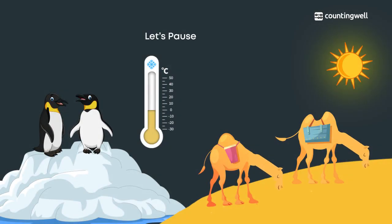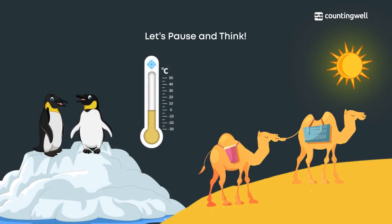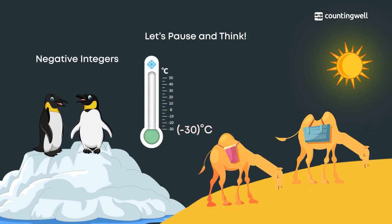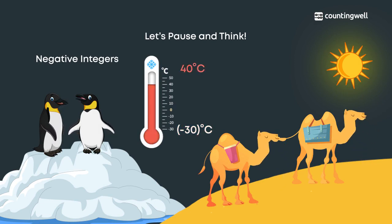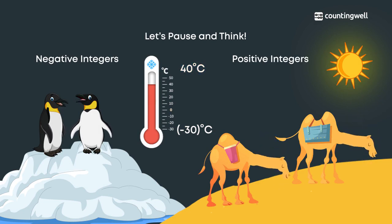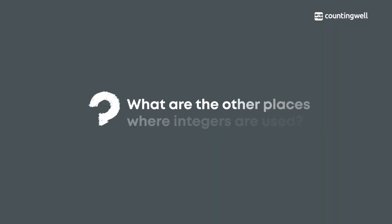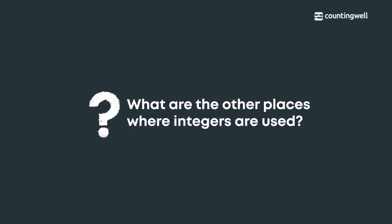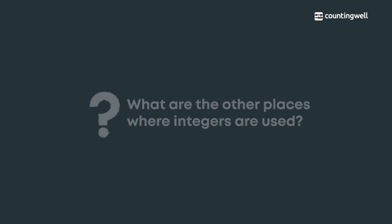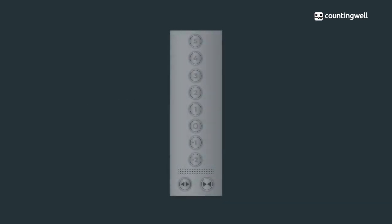Let's pause and think. We use negative integers to show temperatures which fall below zero degrees, and positive integers to show temperatures above zero degrees. What are the other places where integers are used?